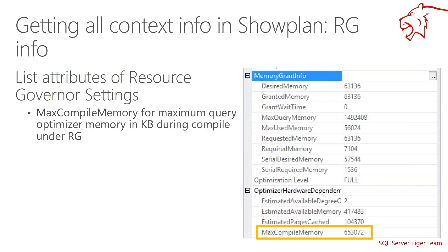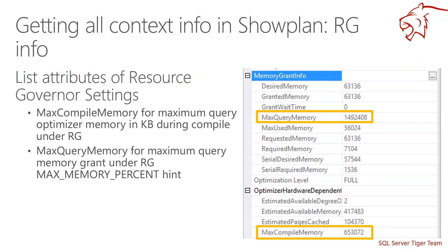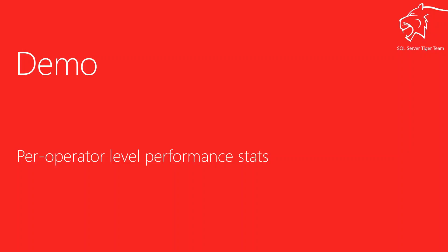Instead of the entire server memory, you may be bound to a specific resource pool that through the classifier function is binding your execution to a pool with less memory. We also added max query memory, showing the setting of max memory percent hint configured in the resource pool you're executing on. If you're not using Resource Governor, you're running in the default resource pool, and this will show the max memory available under that default pool.